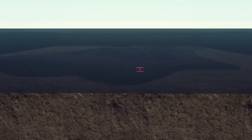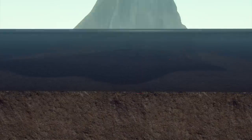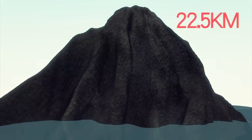Tamu Massif formed around 145 million years ago, and its peak is 4.4 kilometers above the sea floor. By comparison, Olympus Mons would rise over 20 kilometers above the sea floor on Earth.